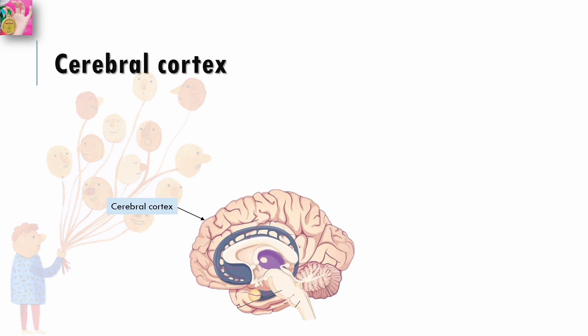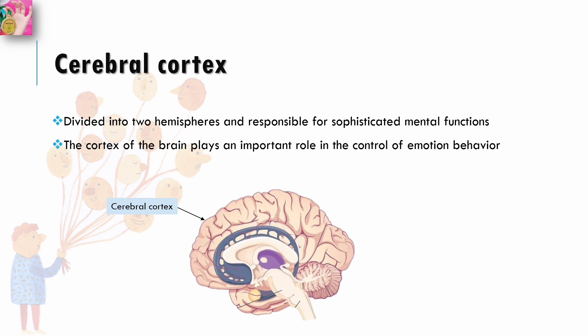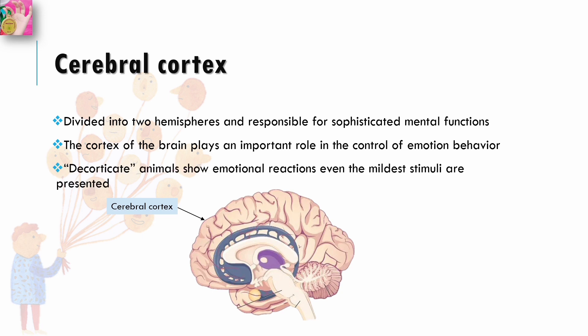Having covered the autonomic nervous system, let's now talk about the central nervous system and discuss what kind of physiological correlates of emotion occur there. Starting with the cerebral cortex: the cerebral cortex is basically divided into hemispheres and is responsible for sophisticated mental functions. The cortex of the brain appears to play an important role in the control of emotional behavior.